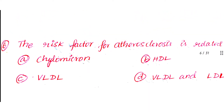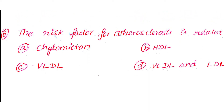Question number 6: The risk factor related to atherosclerosis. Option A: Chylomicron. Option B: HDL. Option C: VLDL. Option D: VLDL and LDL. The answer is Option D: VLDL and LDL.